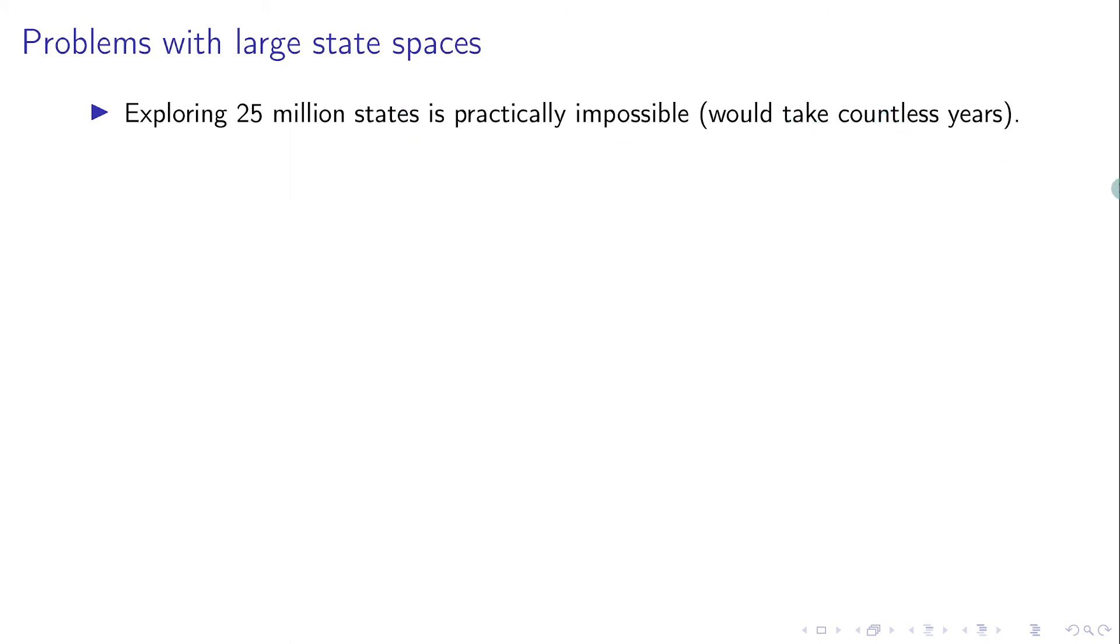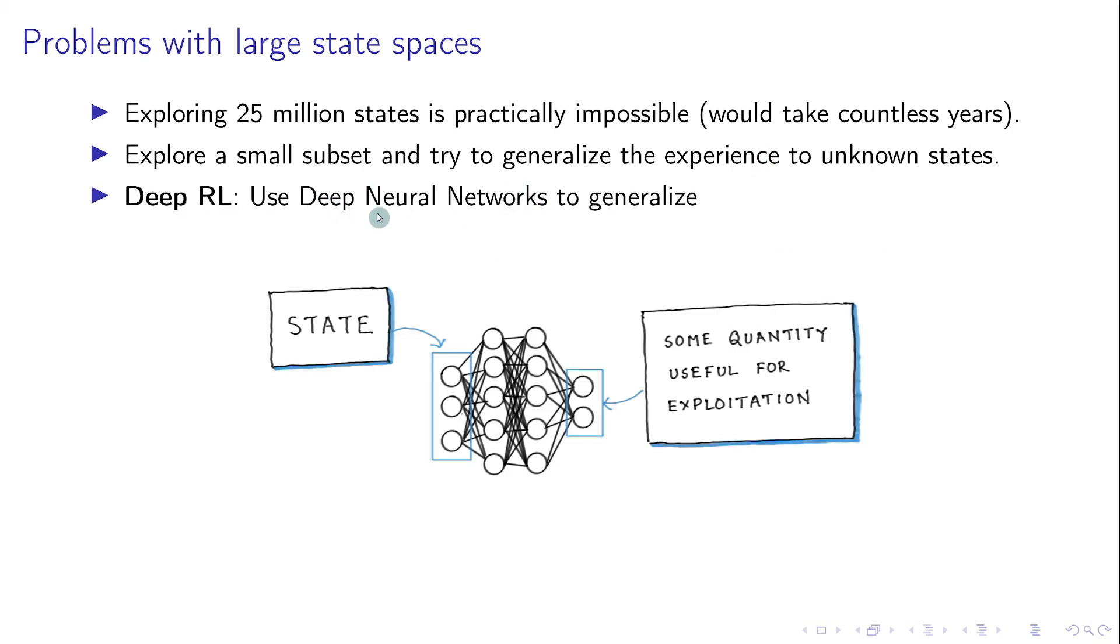So the solution for problems with large state spaces is to explore a small subset of states, and then try to generalize that experience to unknown states. And we do this generalization using deep neural networks, and that gives us deep reinforcement learning. Basically, the neural network takes a state as an input, and outputs some quantity that's useful for exploitation. The network is then trained on the states that the agent visits, and is used to generalize that knowledge to unknown states that the agent has not visited yet.